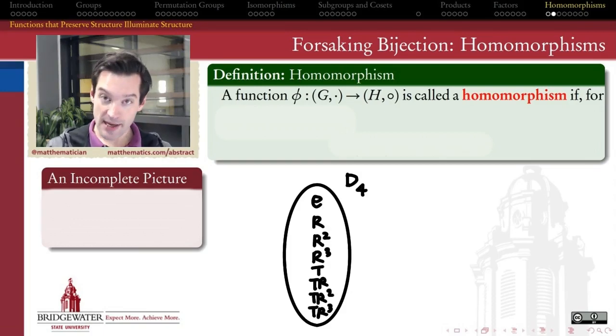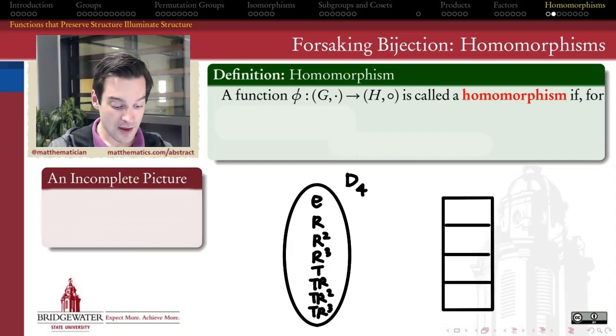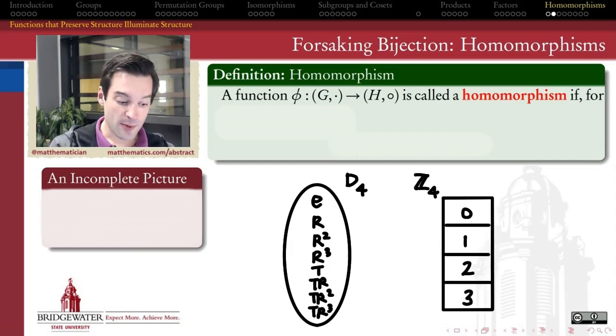Suppose I take the dihedral group of the square, the group of symmetries of a regular four-sided polygon. That group has eight elements in it, r being a 90-degree rotation, t being a reflection about an axis of symmetry, and everything else being compositions thereof. This is a group of order 8. Suppose I also take the group Z4, the cyclic group of order 4, with integers with addition.